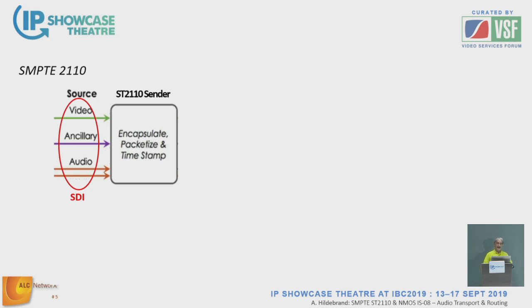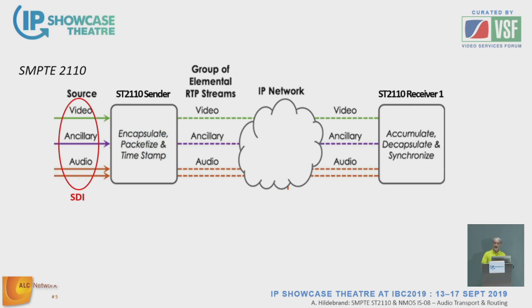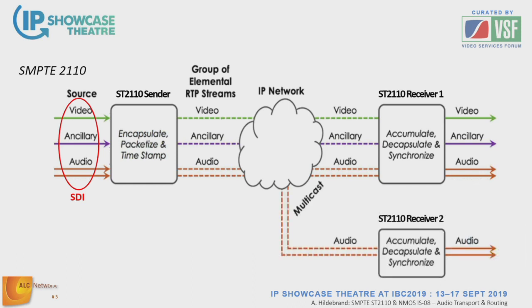As an introduction to ST 2110: if we have an SDI signal containing video, audio, and solid data, an ST 2110 sender takes the individual essences and puts them as individual streams on the network. Any receiver interested in getting the essence data can subscribe to these streams and recompile the original signal, because all synchronization information is inherently contained in the network via the Precision Time Protocol. Simply transporting SDI into the network and out wouldn't make sense for 2110 — we could have used 2022-6 for that.